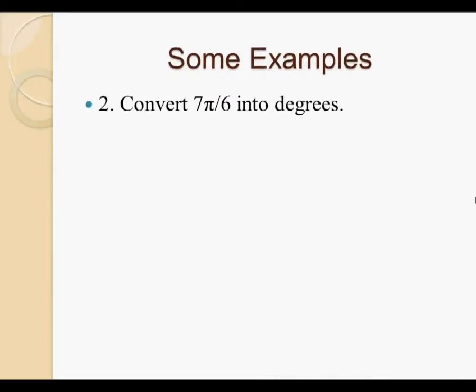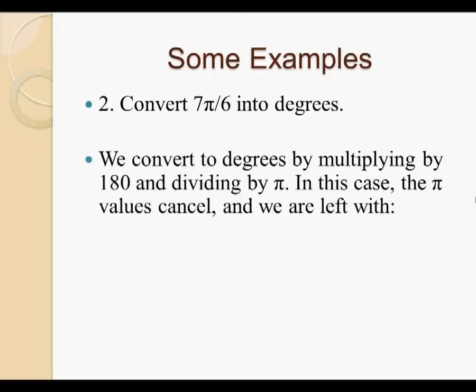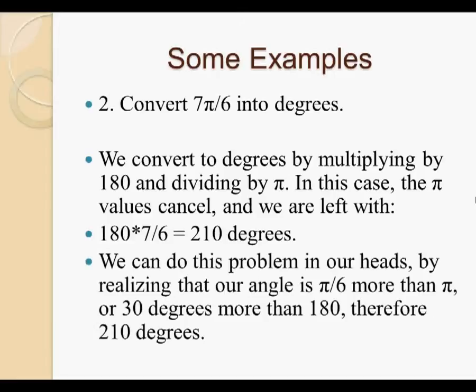Our second example asks us to convert 7 pi by 6 into degrees. We convert to degrees by multiplying by 180 and dividing by pi. In this case, the pi values cancel, and we are left with 180 times 7 divided by 6 equals 210 degrees. We can also do this problem with our heads by realizing that our angle is pi by 6 more than pi, or 30 degrees more than pi, which is 180 degrees. Therefore, 30 plus 180 is 210 degrees. If this is difficult for you, you should do a lot of these questions. It will become second nature to you, and an intuitive understanding of this material is very important for success in this subject area.